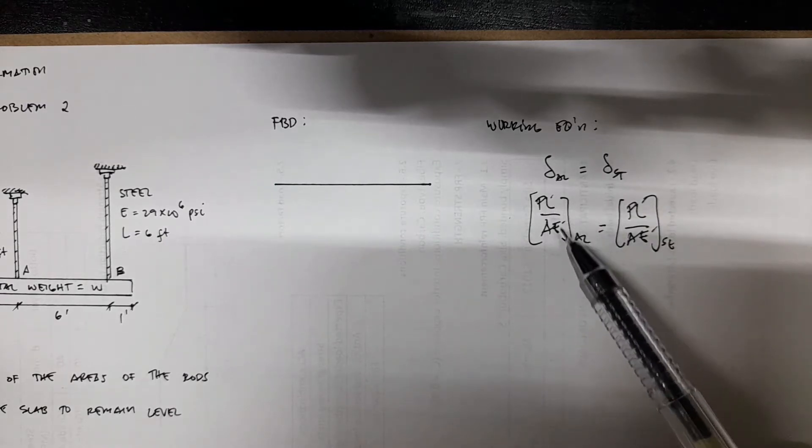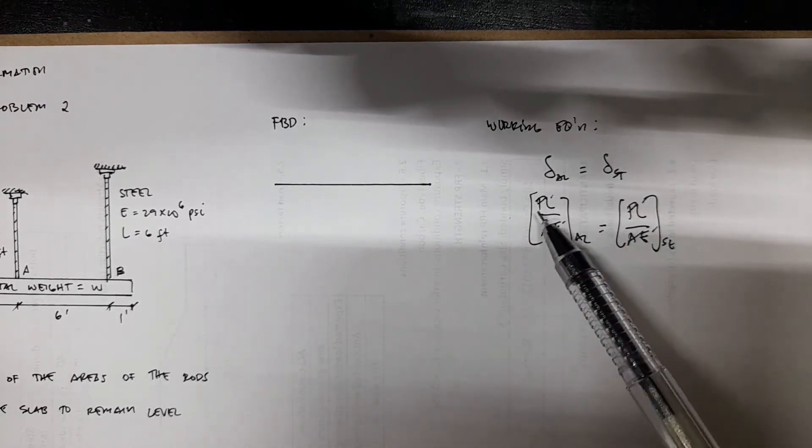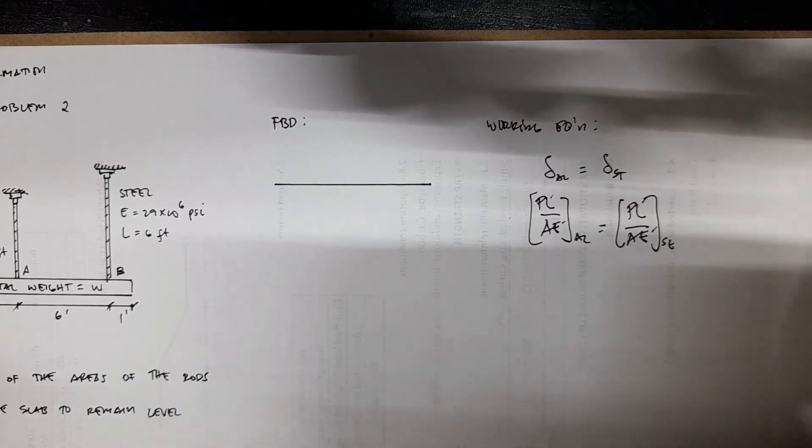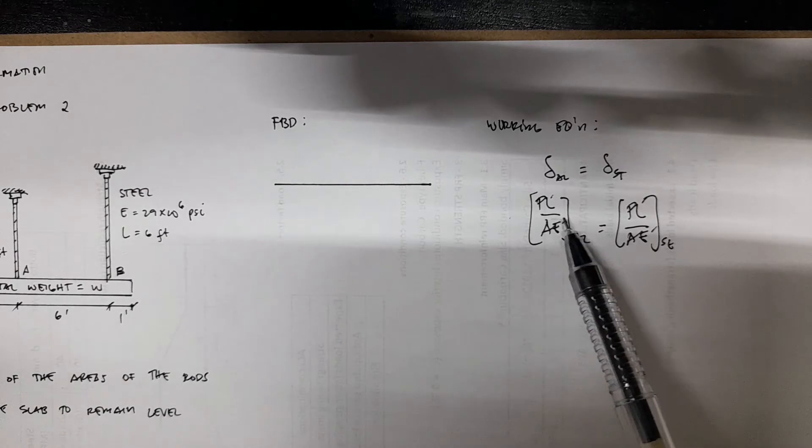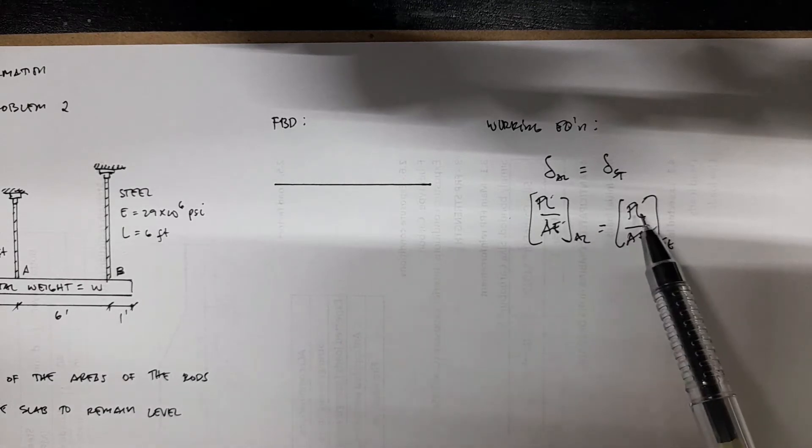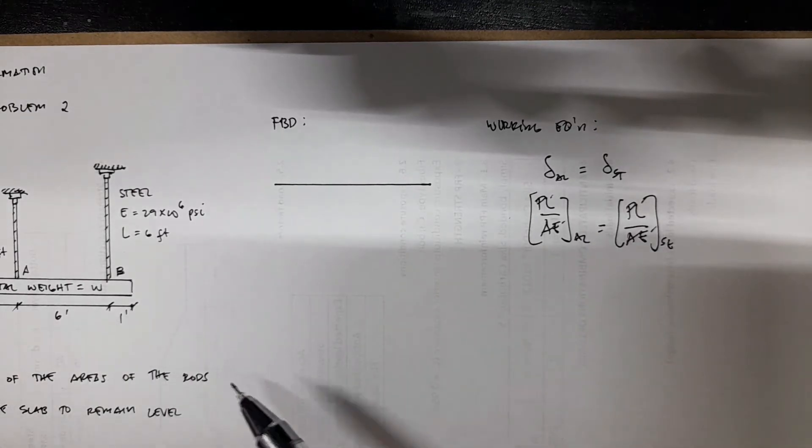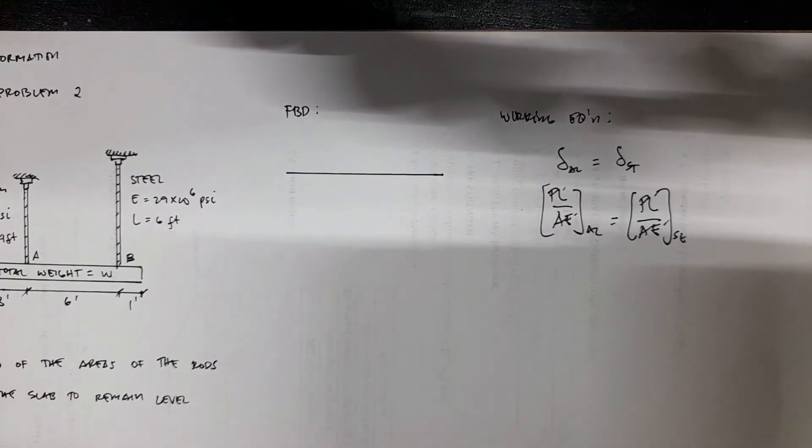But the P is unknown. A is also unknown. We have PL and PL, but we can express both P aluminum and P steel in terms of W. How do we express that in terms of W?